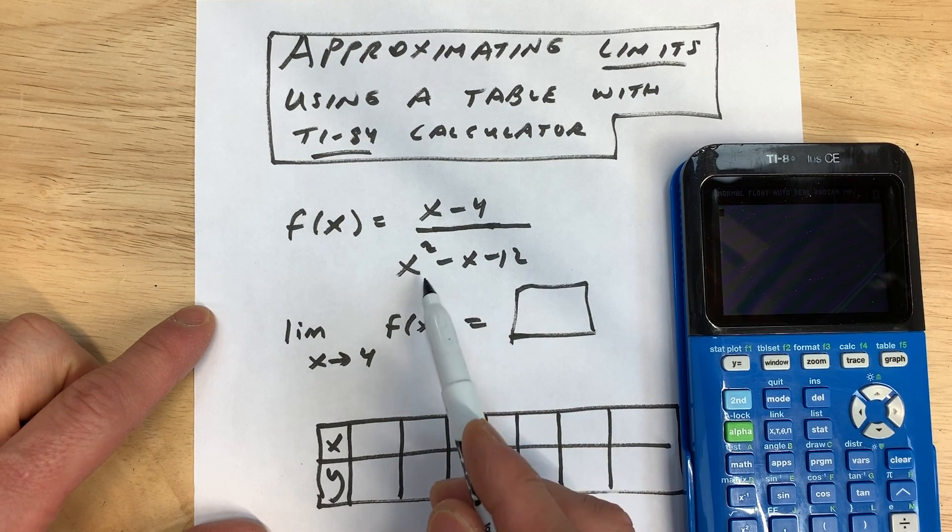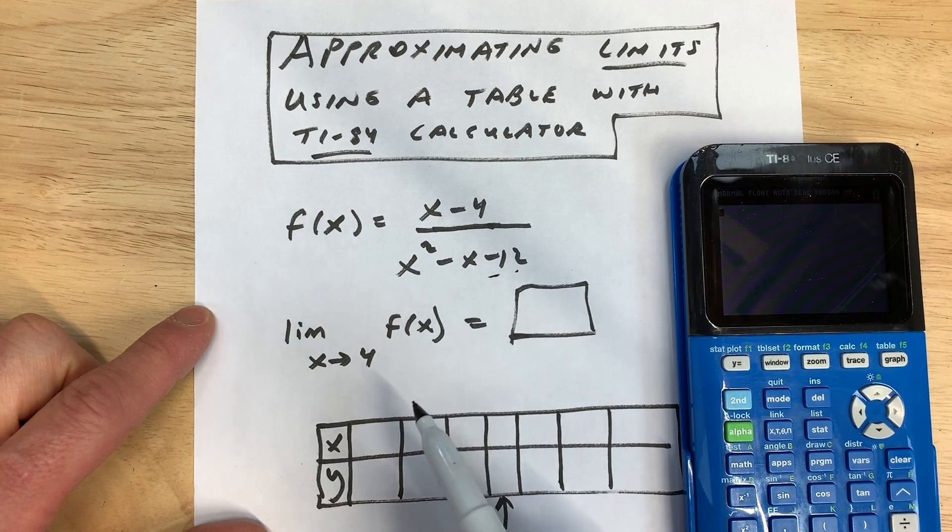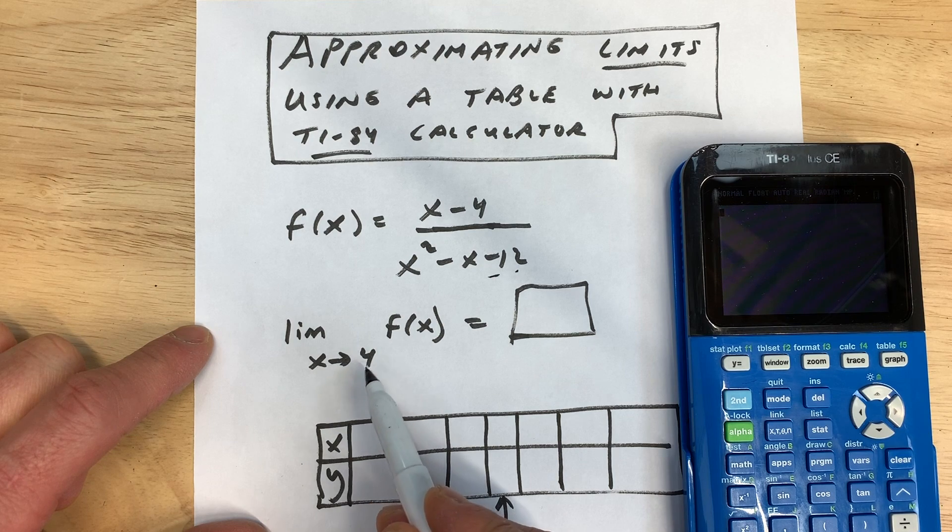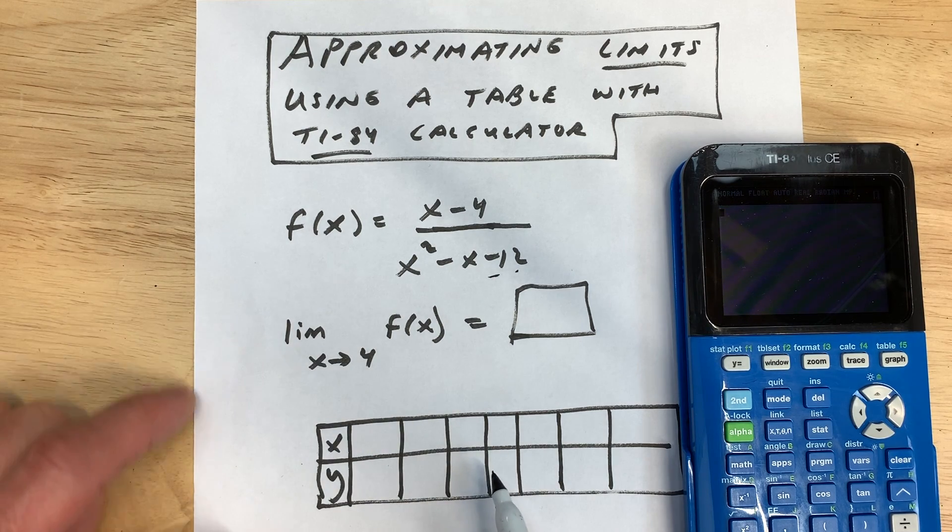So we're given this function x minus 4 over x squared minus x minus 12, and we want to find the limit as x approaches 4 using this table here.